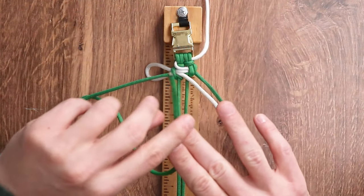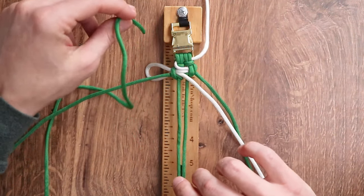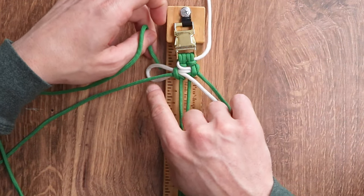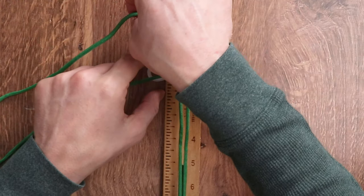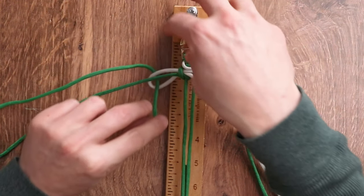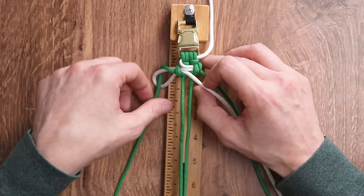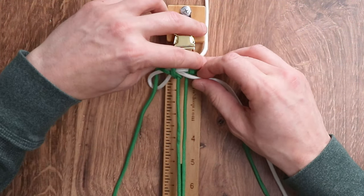Our next step, we want to take our green left working strand, go behind our white loop, and put the strand through that loop. And from here, we're going to tighten both of our cords.